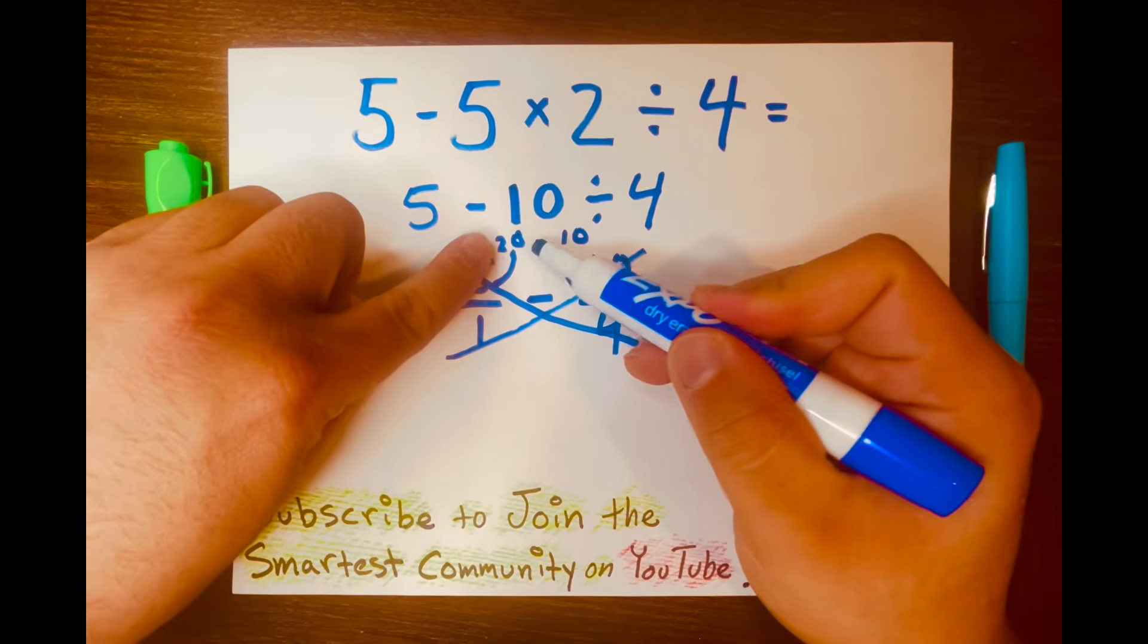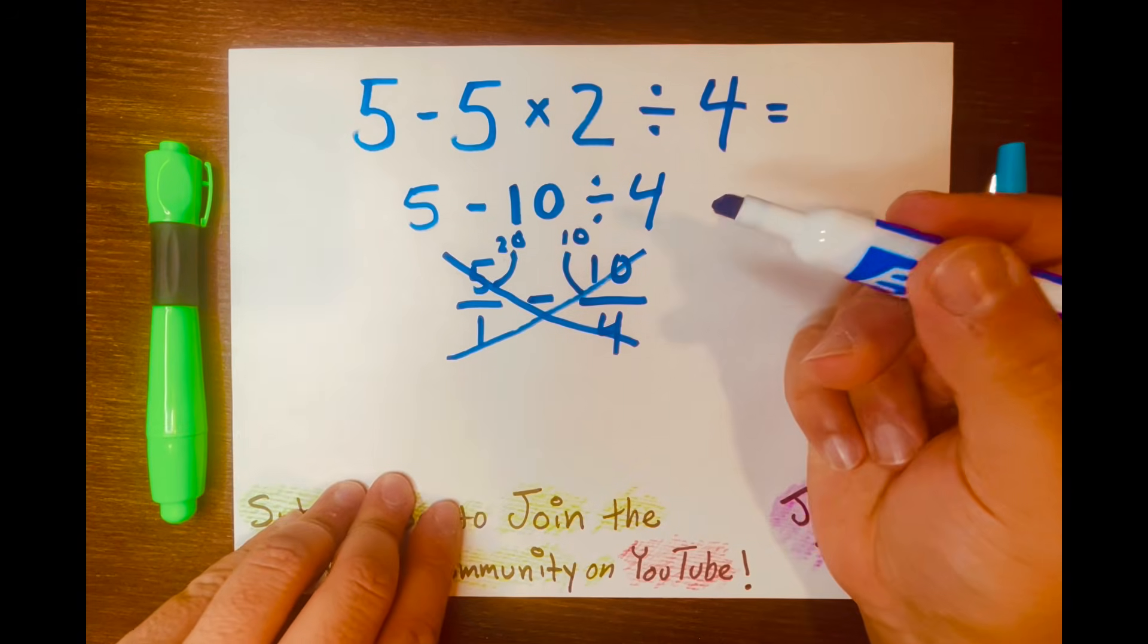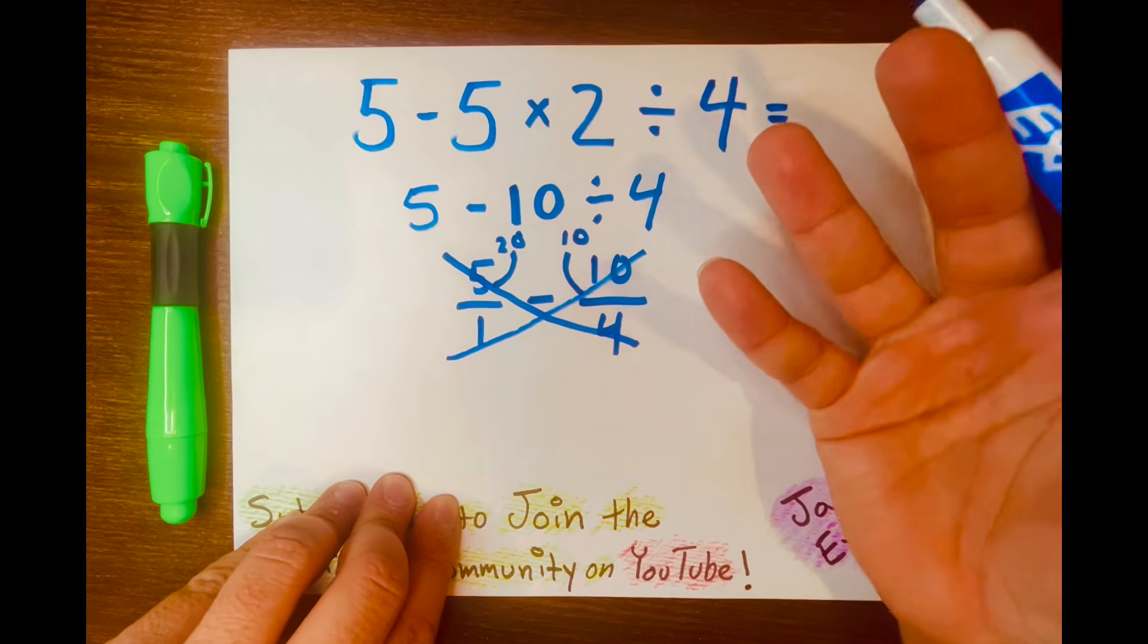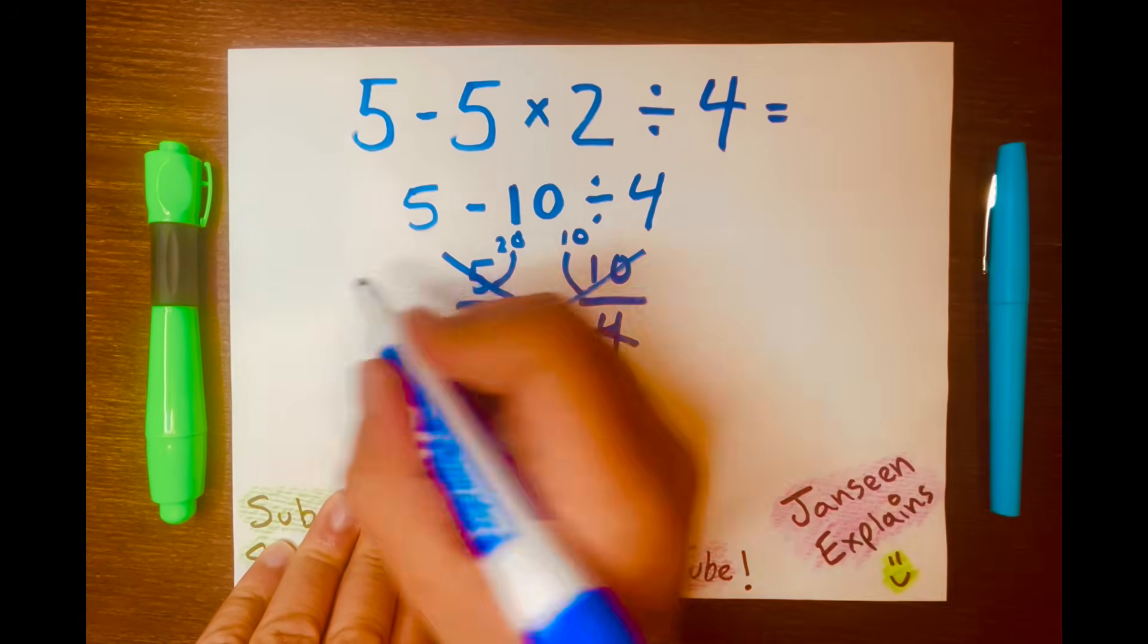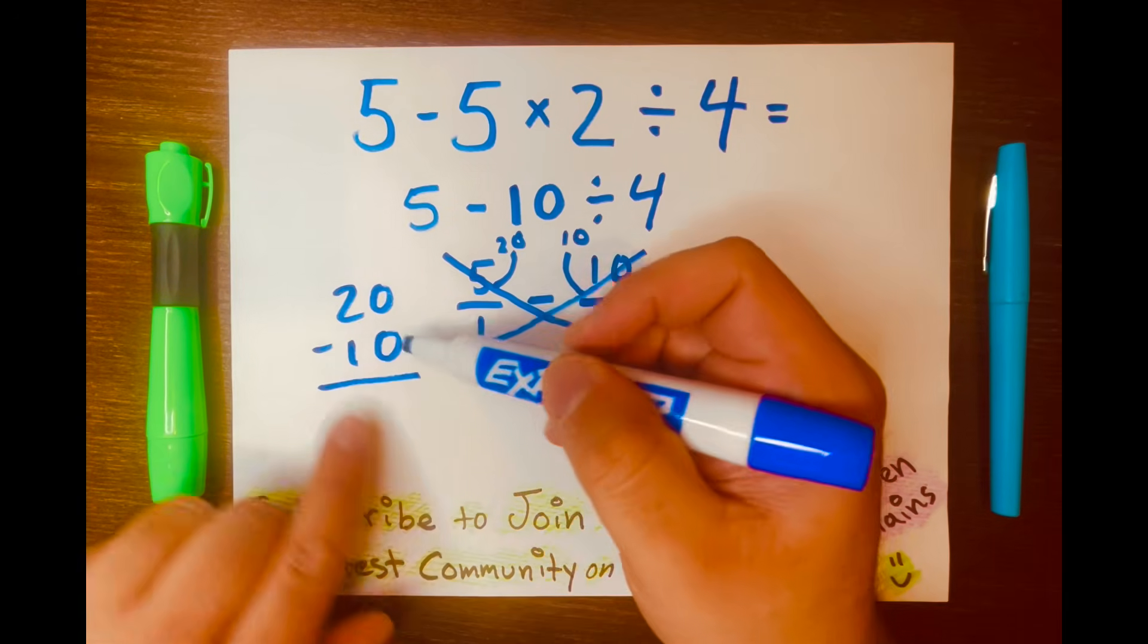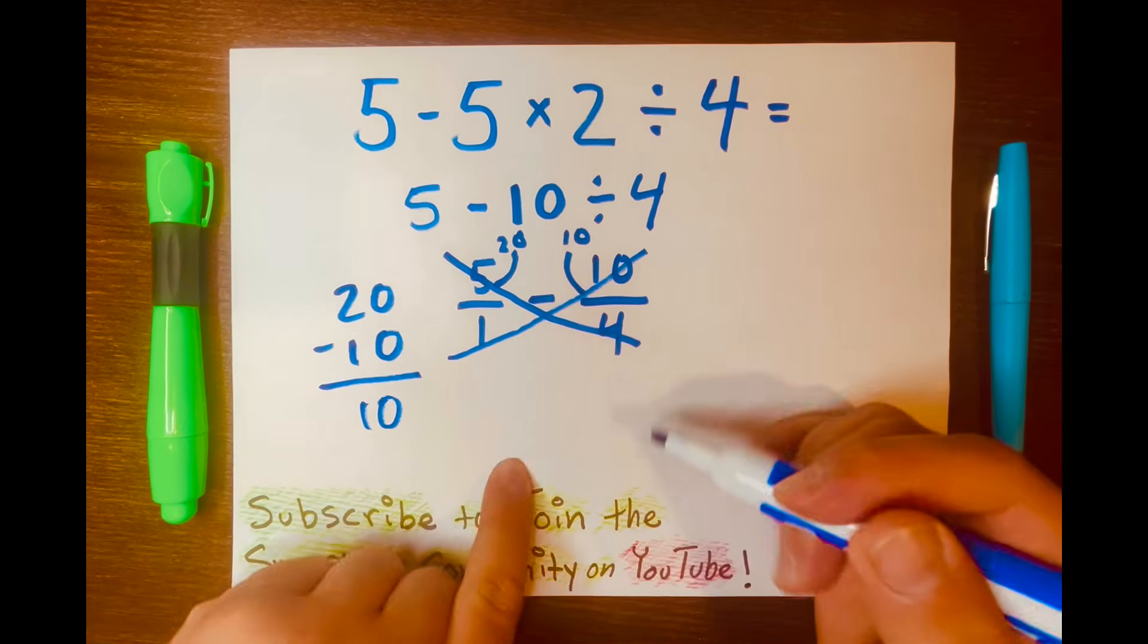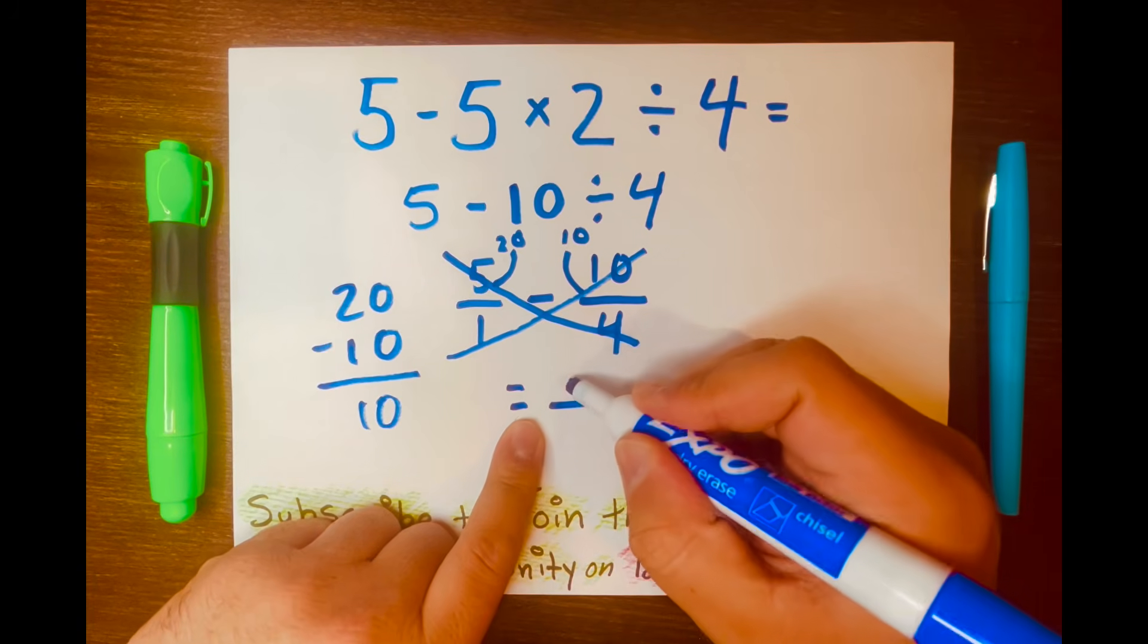And so now we can subtract 20 minus 10, which equals 10. But let's do some subtraction to make the math fun here. So 20 minus 10 equals 10. That will go up here, the 10. That is the numerator above the fraction bar there.